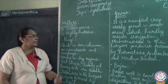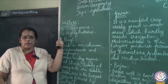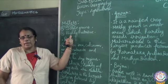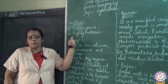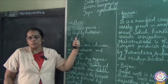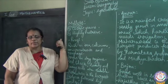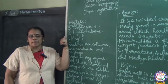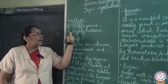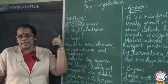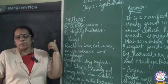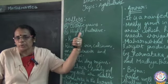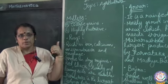Millets are coarse grains with a rough appearance. The second characteristic feature is that they have a high nutritive value. So the two features are: millets are coarse grains, and they have high nutritive value.